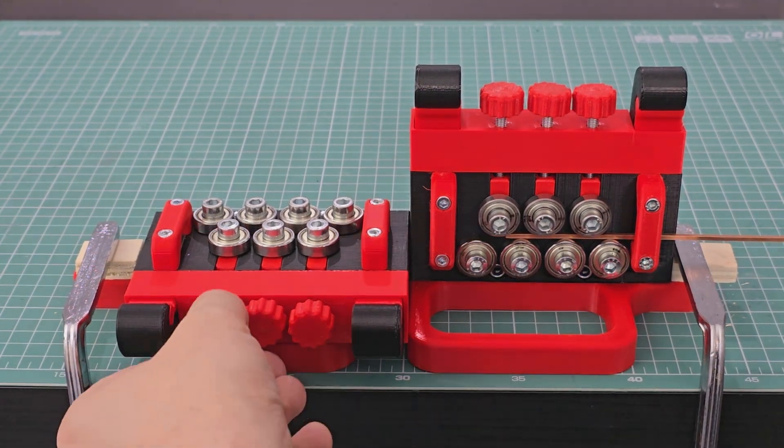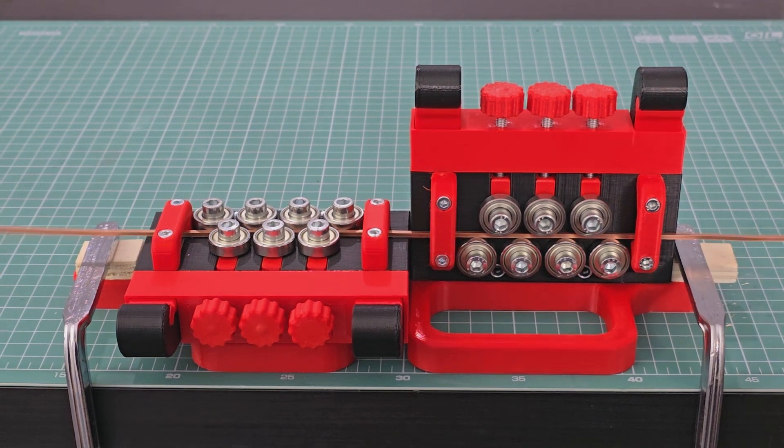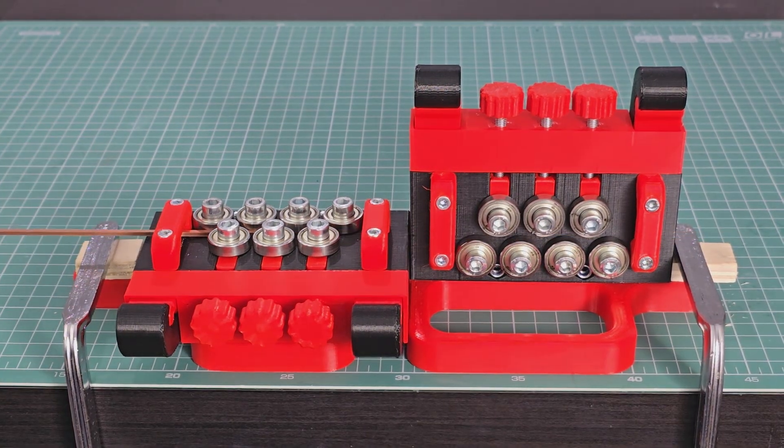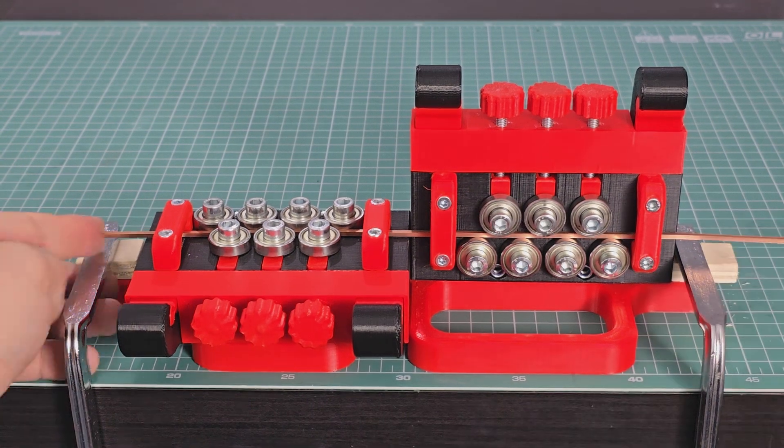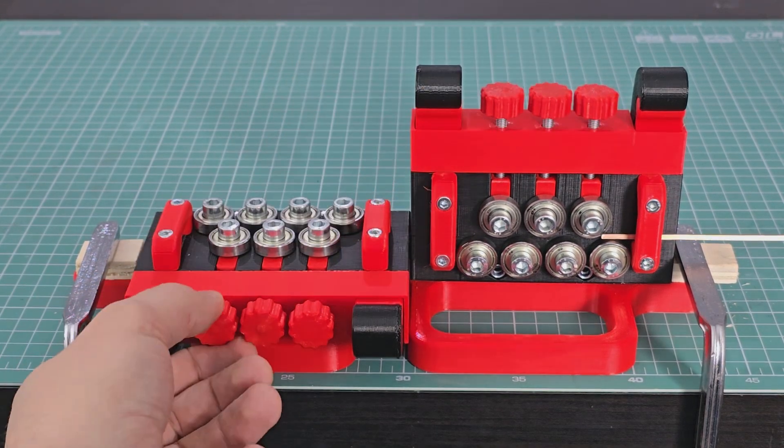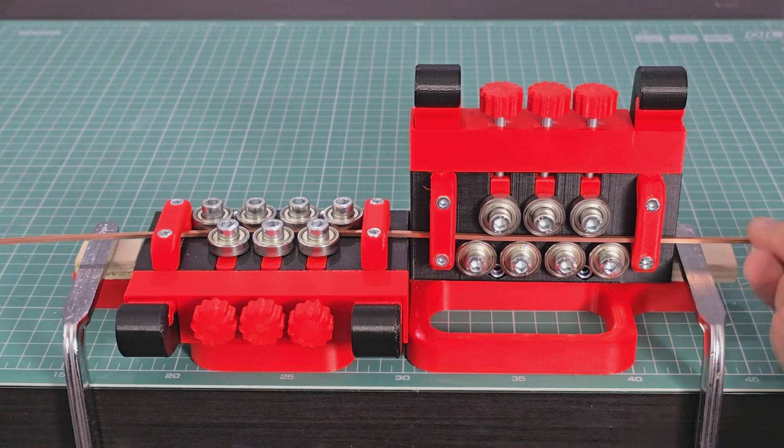And increasing a bit the pressure on the adjustable rollers helps take out the rest of the kinks. A bit more pressure for good measure. And it's smooth.